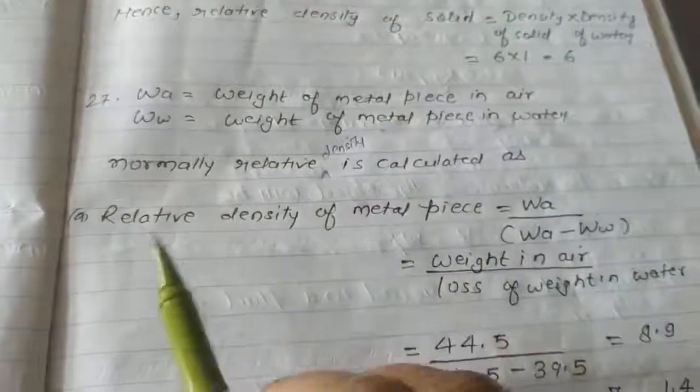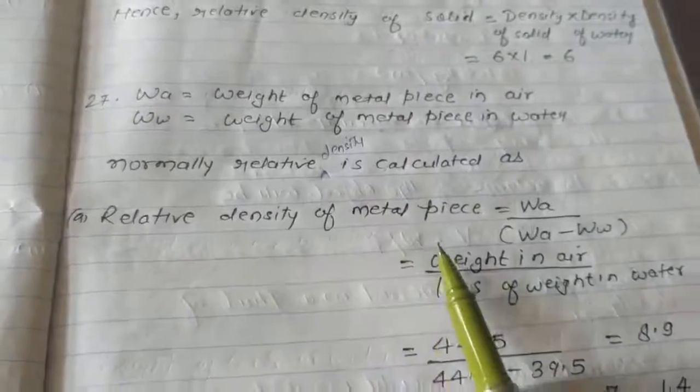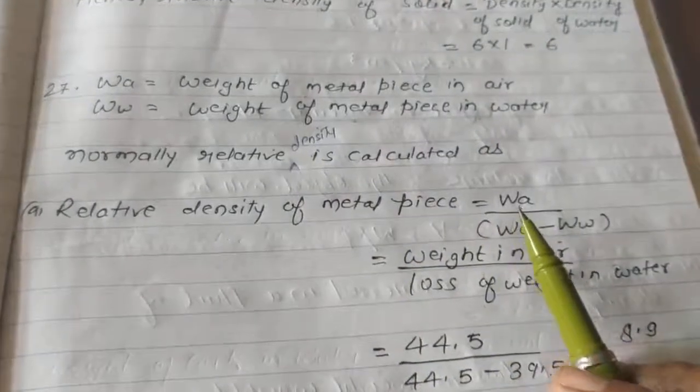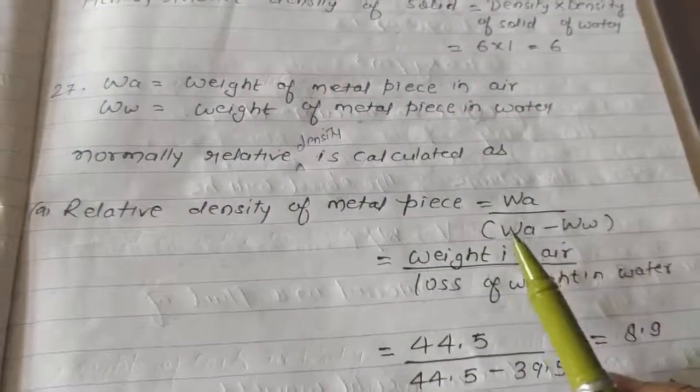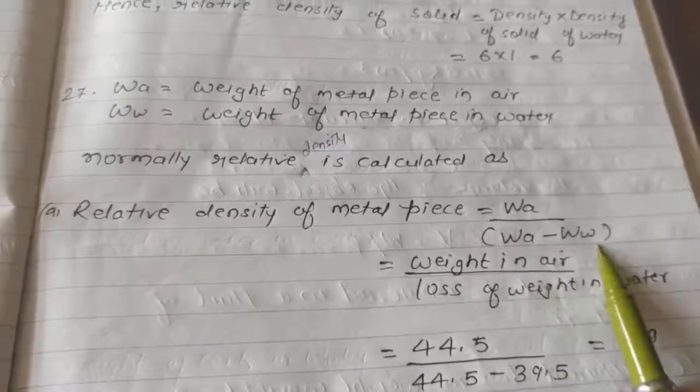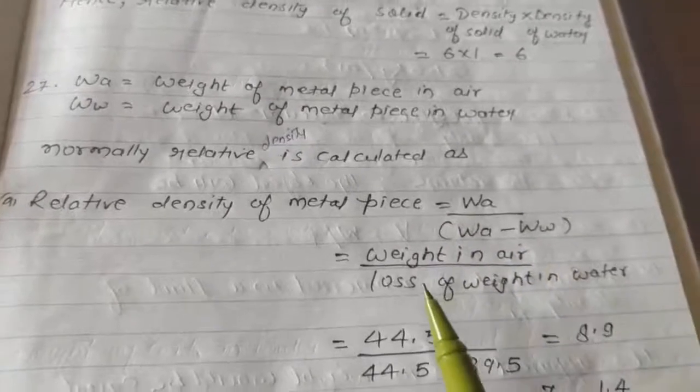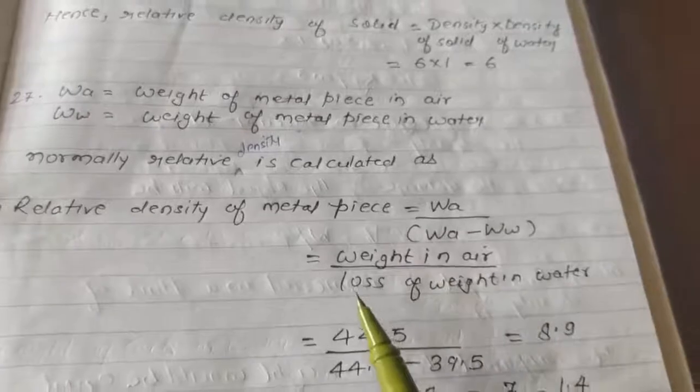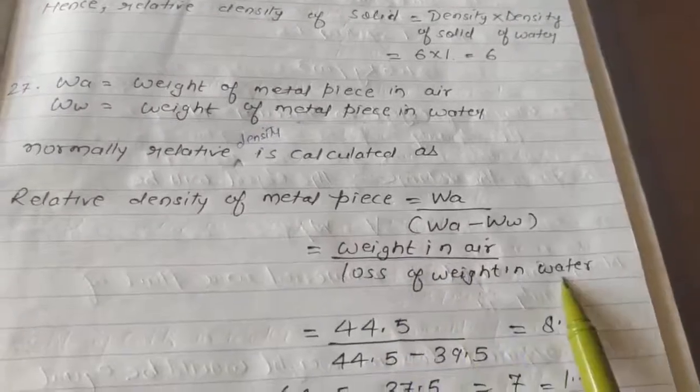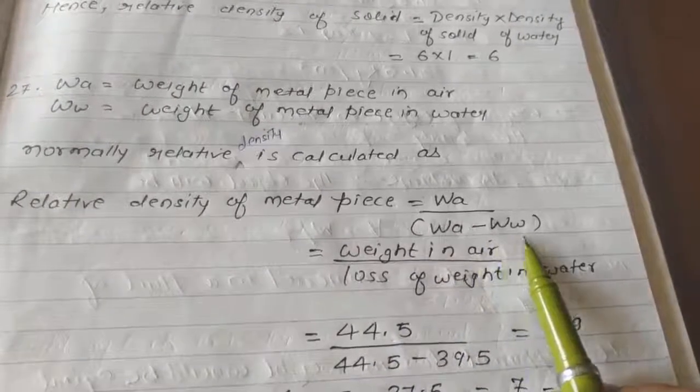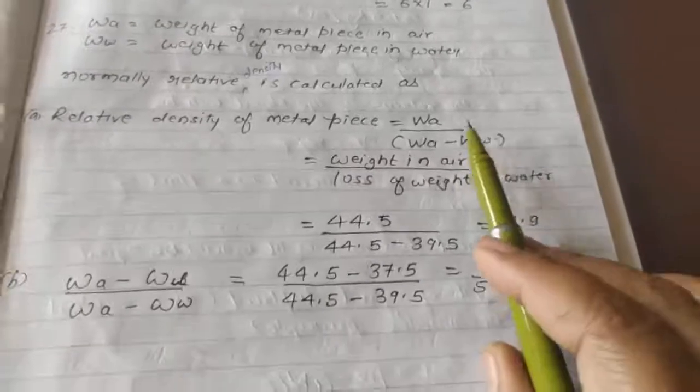Is calculated as, relative density of metal piece is equal to W a upon W a minus W w. So, weight in air upon loss of weight in water. W a minus W w is loss in weight. So, we will find the values now.